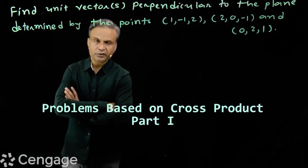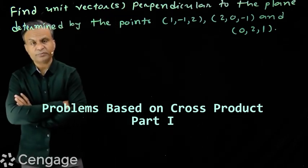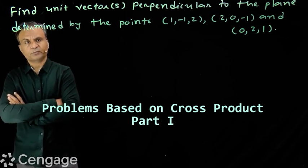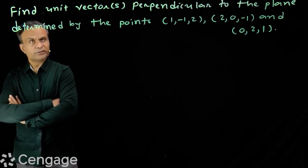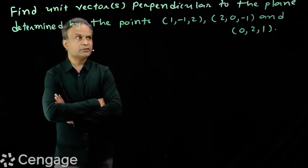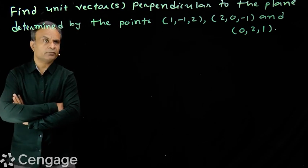Hello students, in this video we will work out some elementary problems based on cross product of two vectors. Let's start with this question: find unit vector or vectors perpendicular to the plane determined by the points.